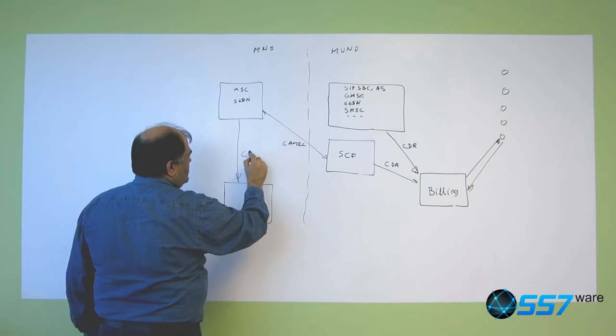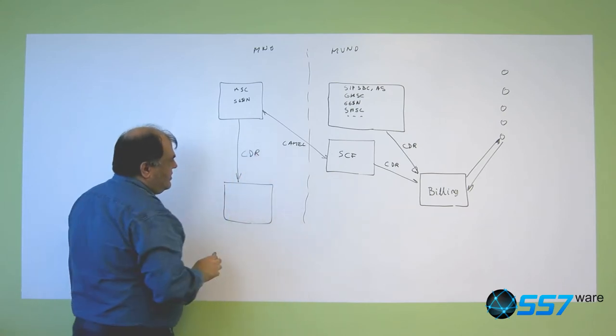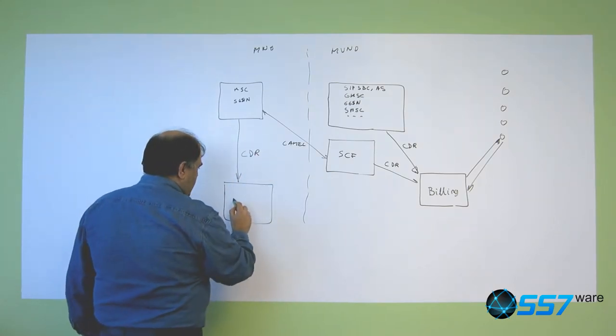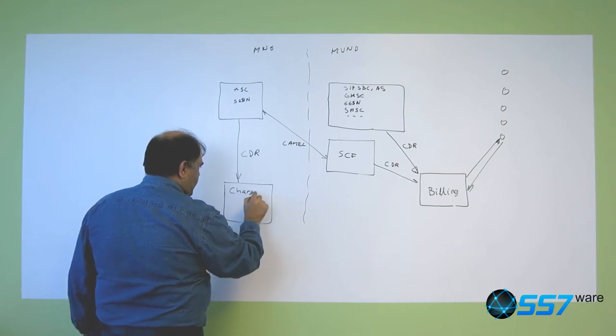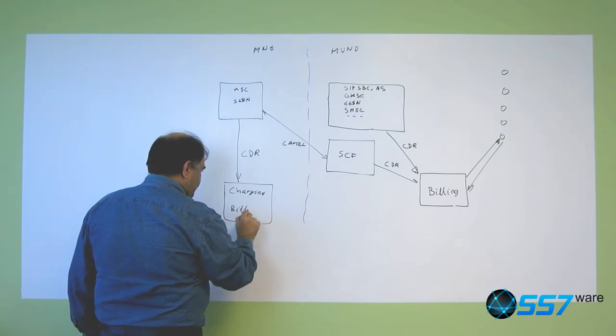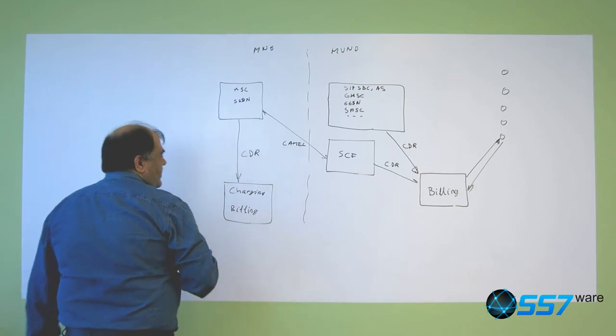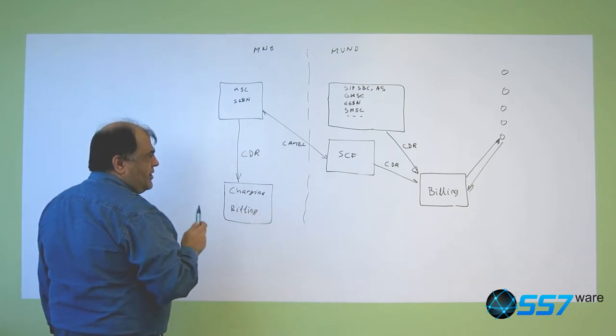the MVNO could also generate CDRs. And these CDRs are here in a charging and billing system, and the MVNO operator will generate two kinds of information that go here.